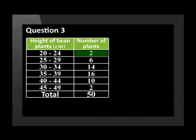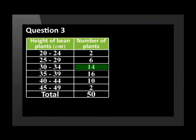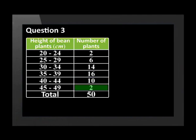There were two plants between 20 and 24 centimeters in height, six between 25 and 29, and 14 between 30 and 34. In addition, 16 plants measured between 35 and 39 centimeters, ten between 40 and 44, and just two from 45 to 49. This accounts for the total of 50 plants.